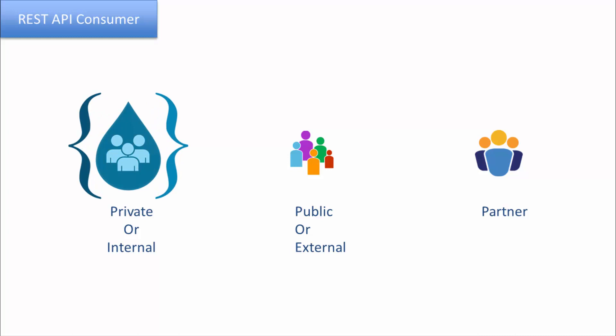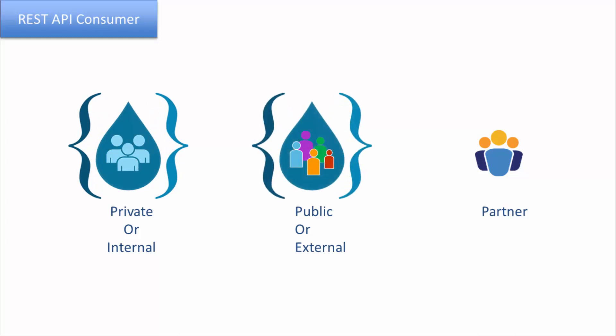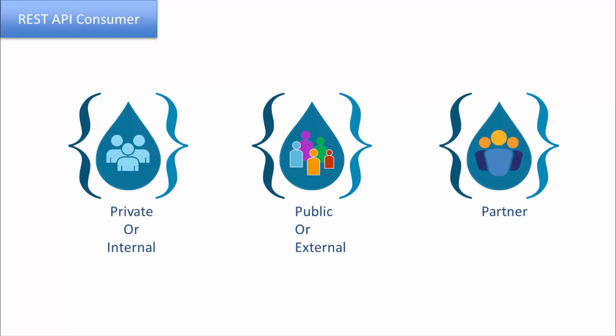The private API is meant for the private or internal consumer. The public API is meant for the public application developers. And then the partner API, which is meant for that trusted partner that is outside the enterprise or the organization.